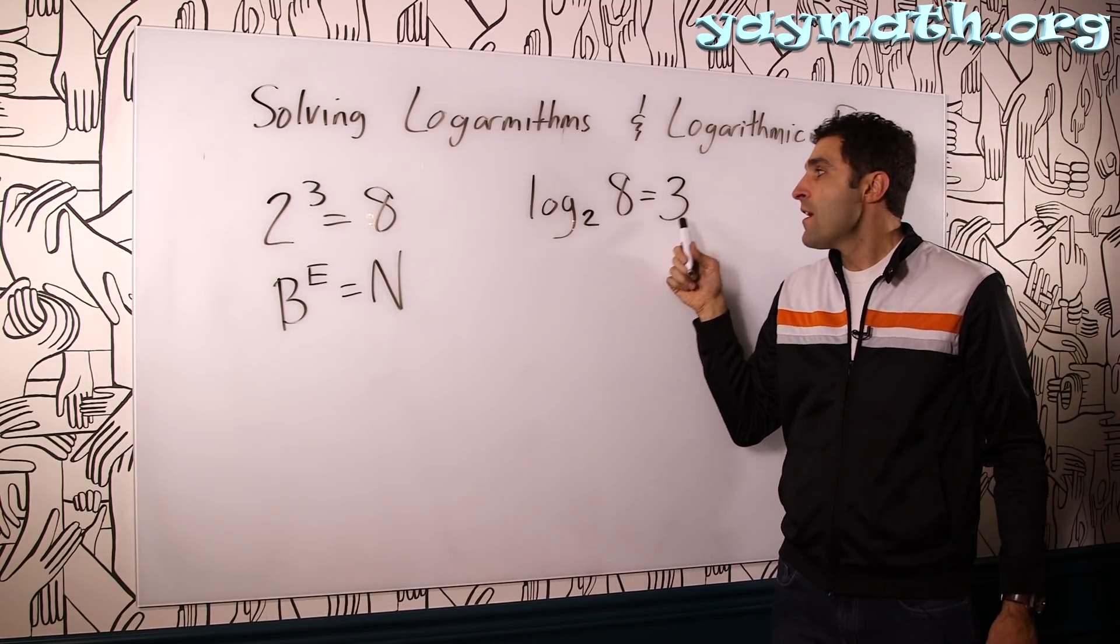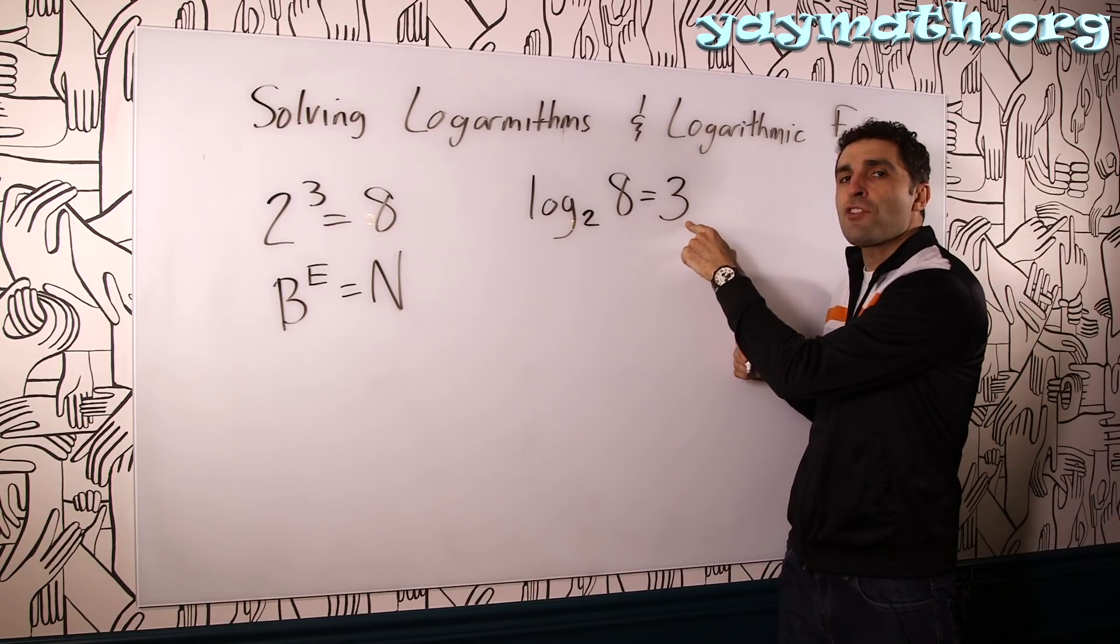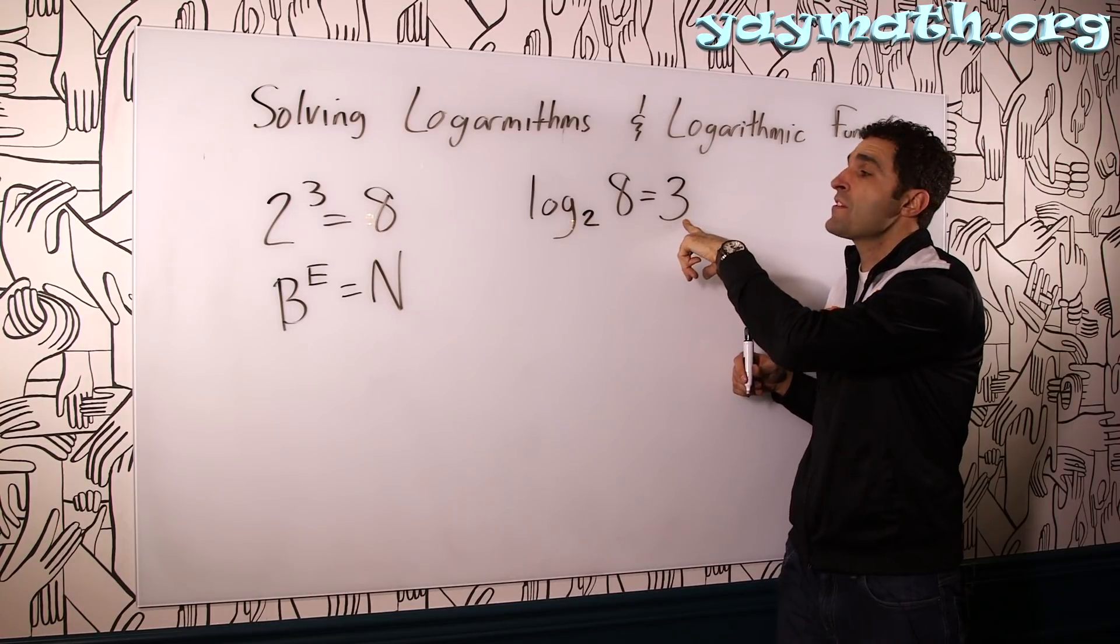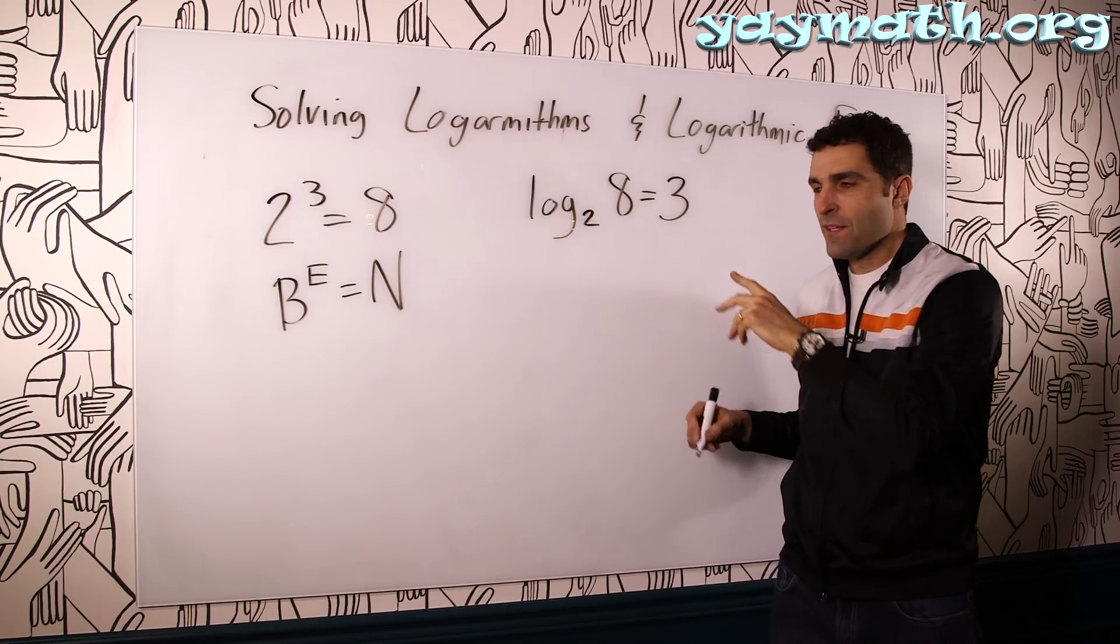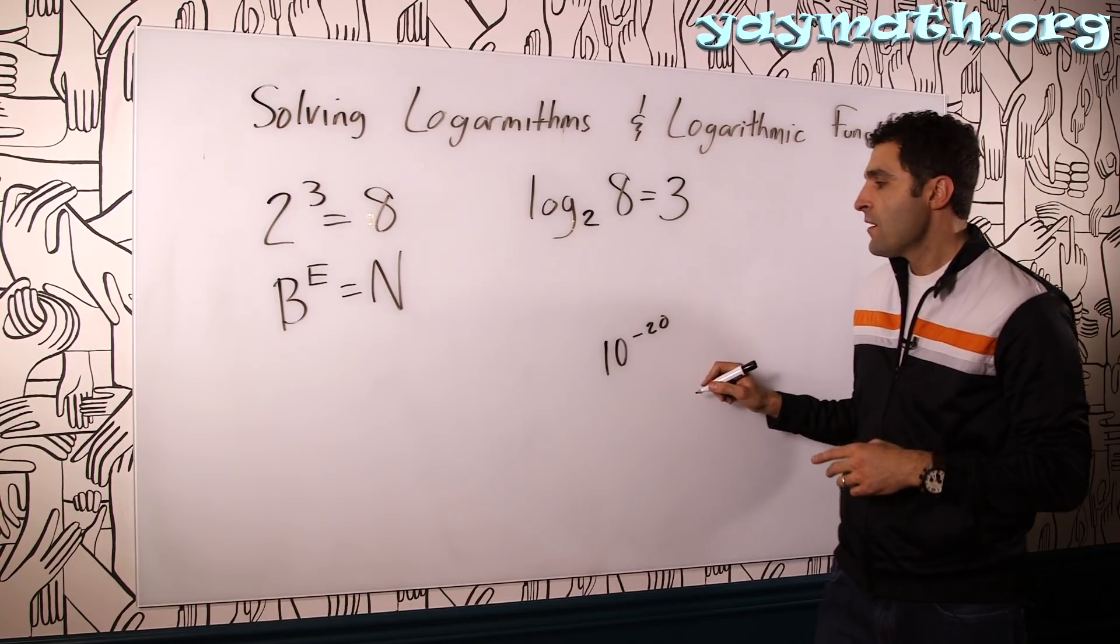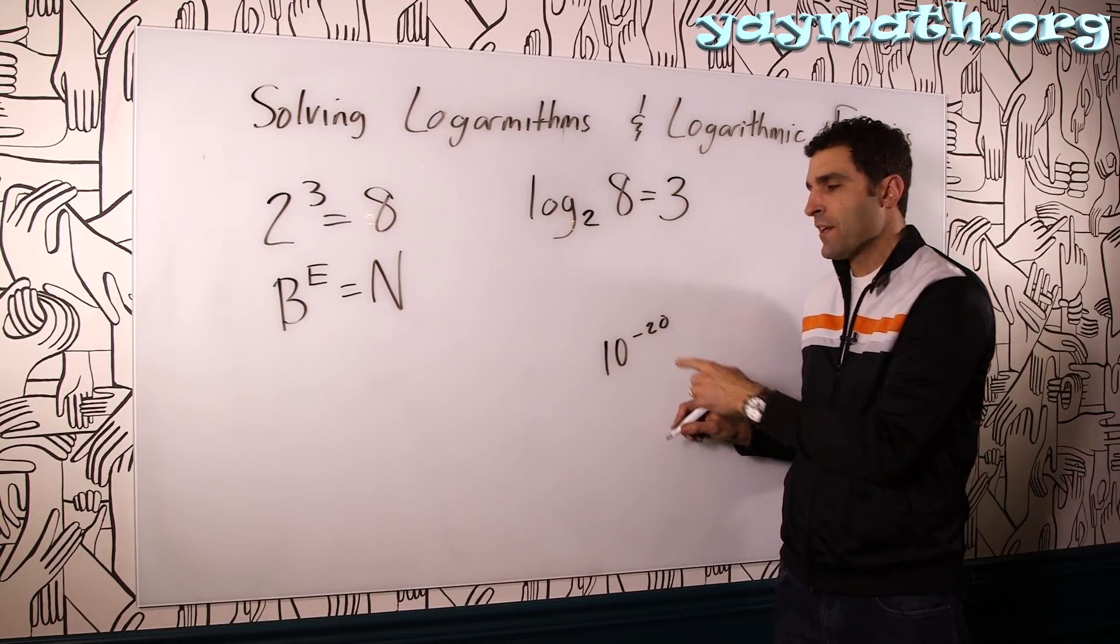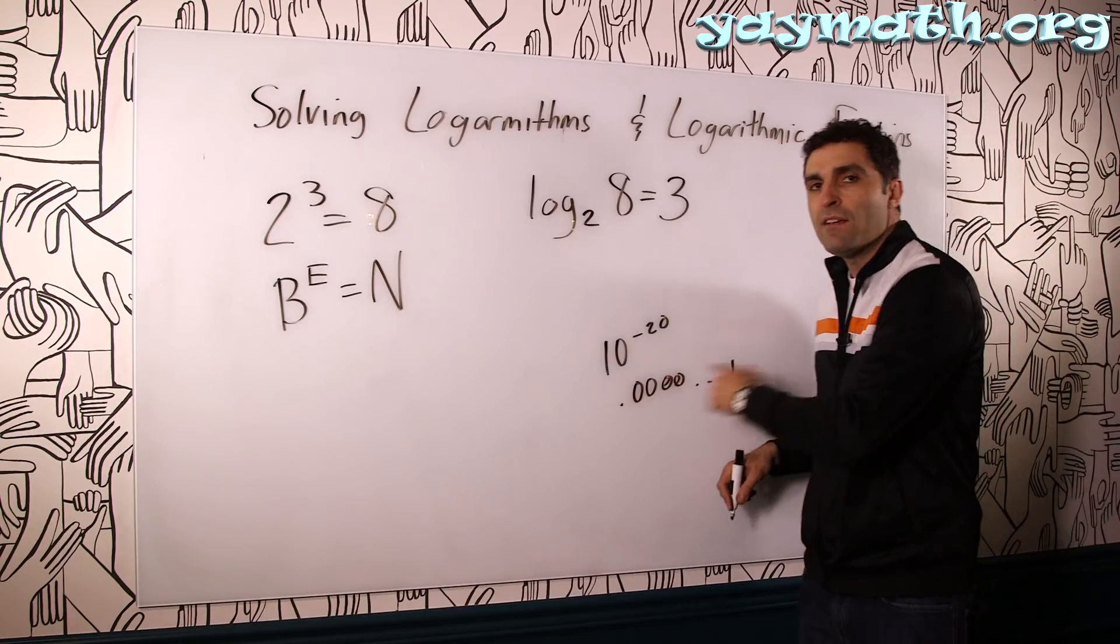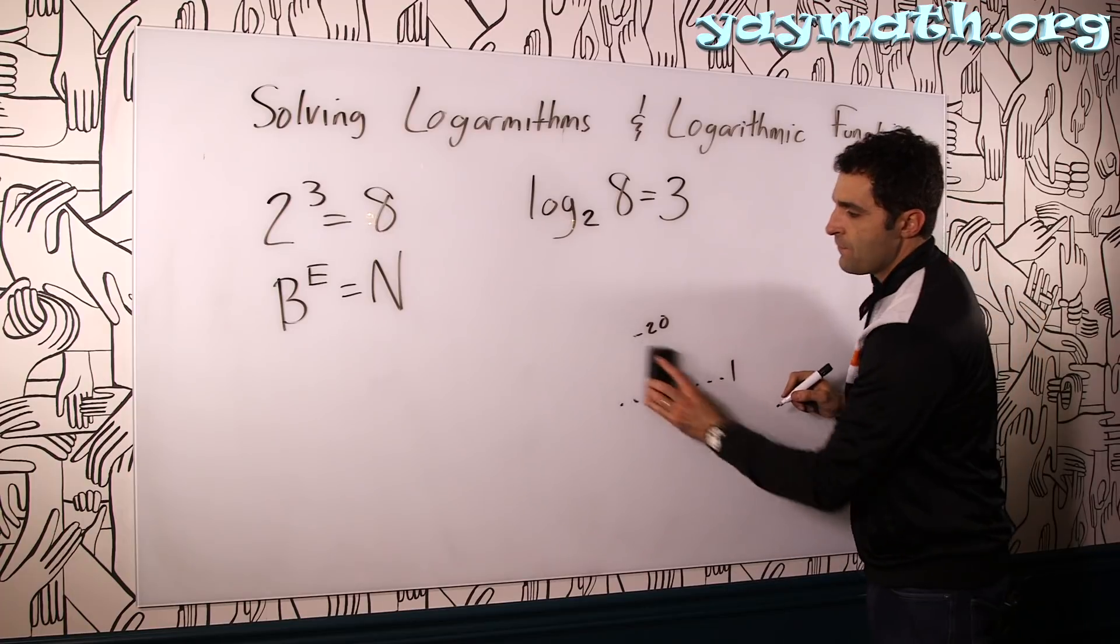Remember, logs result in exponents. The reason logs result in exponents is we need a certain math function that only churns out exponents. This is especially helpful for very large numbers or very small numbers. Something like 10 to the negative 20. This is an exceptionally small number. But if you only focus on the negative 20, you can deal with the small number just as the number negative 20, and not 0.00000000000000000001. So we don't have to deal with that. Just deal with the exponent itself.